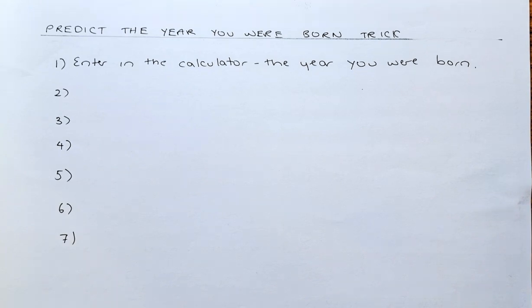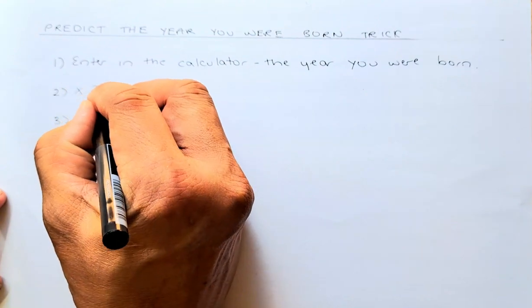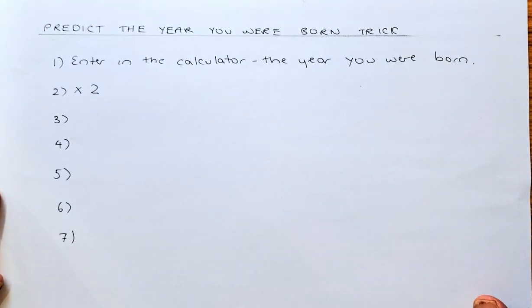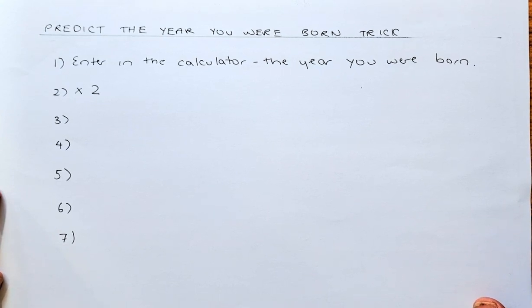Once you have done that, then you are going to multiply in the calculator by 2 or double the number. Then, don't forget the equal sign and we will proceed.